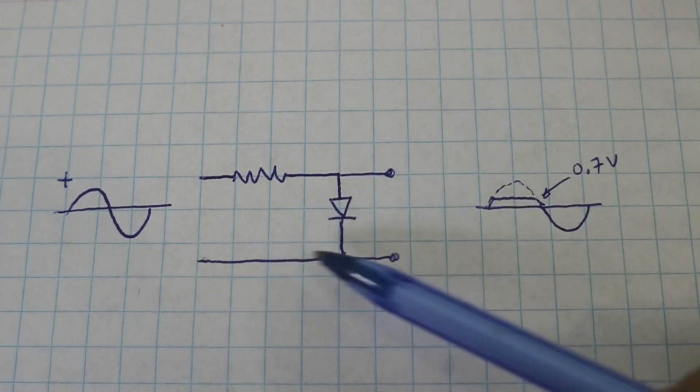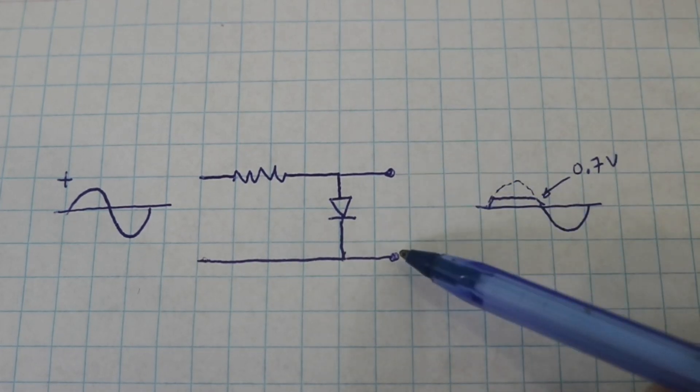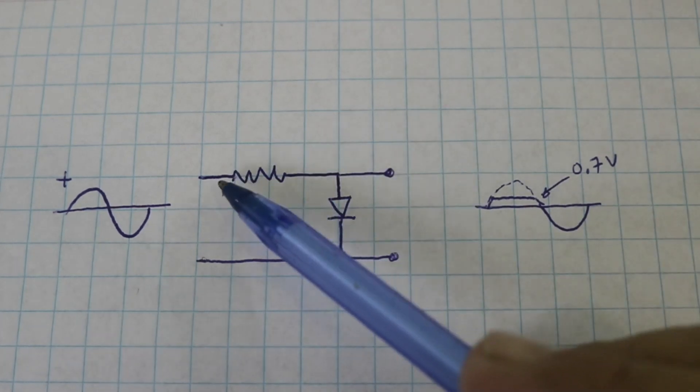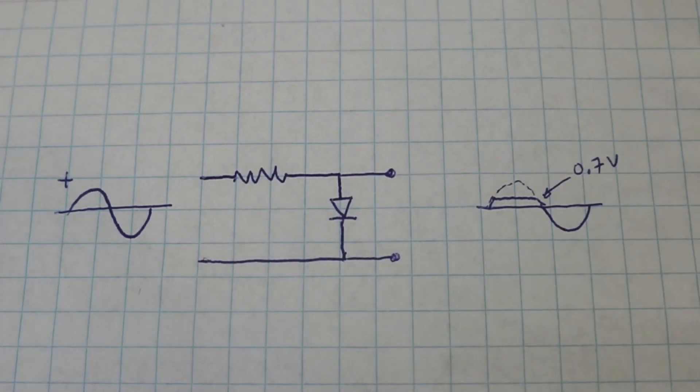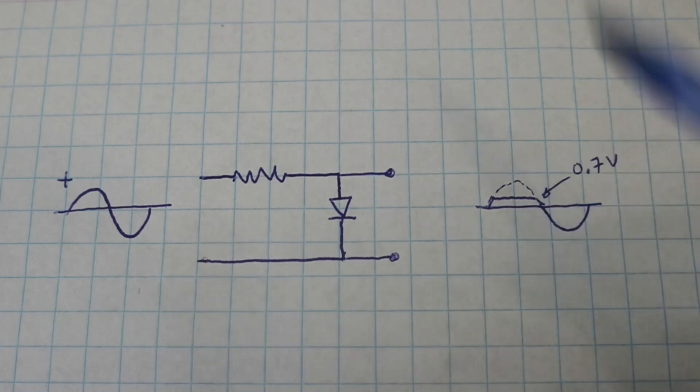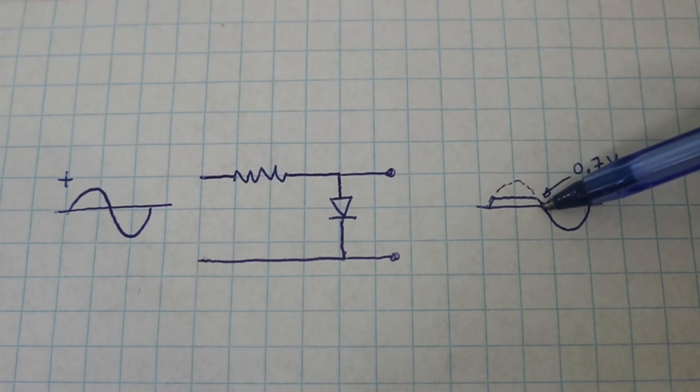So we can see the same form of the wave at the output, but when we reach 0.7 volts the diode starts to conduct the current, and then at this point we only see 0.7 volts even if here we have more voltage. Therefore we will see this plateau here, and when the positive semi-cycle starts to finish the voltage drops.